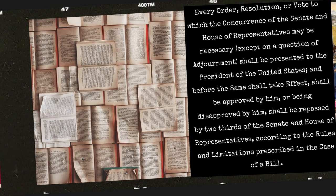Every order, resolution, or vote to which the concurrence of the Senate and House of Representatives may be necessary, except on a question of adjournment, shall be presented to the President of the United States, and before the same shall take effect, shall be approved by him, or being disapproved by him, shall be repassed by two-thirds of the Senate and House of Representatives, according to the rules and limitations prescribed in the case of a bill.